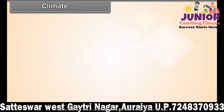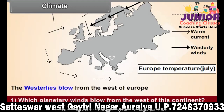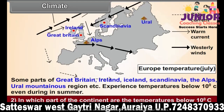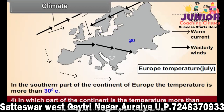Climate: See figure 17.2 showing the distribution of July temperatures and answer the following questions. Question 1: Which planetary winds blow from the west of this continent? Question 2: In which part of the continent are the temperatures below 10 degrees Celsius even during summer? Question 3: What is the mean temperature in the central region of plains? Question 4: In which part of the continent is the temperature more than 30 degrees Celsius?